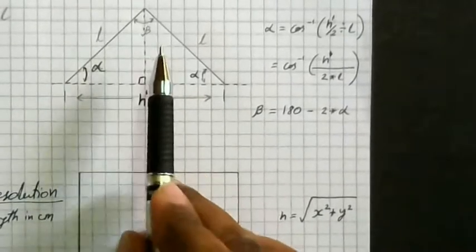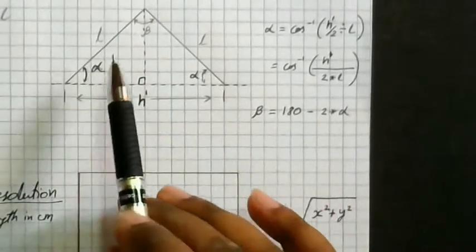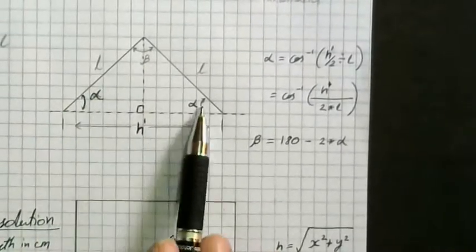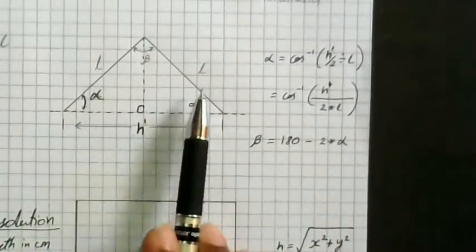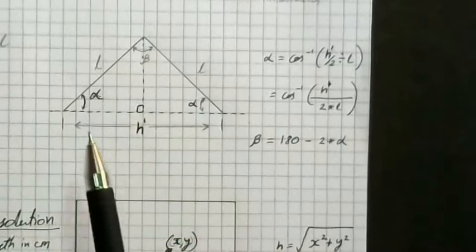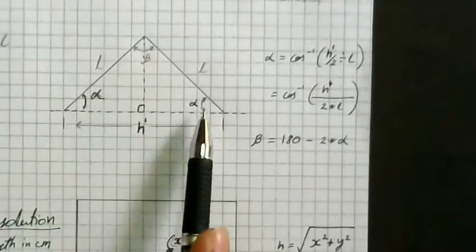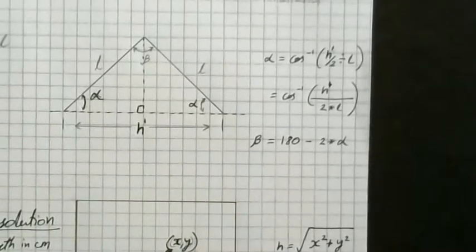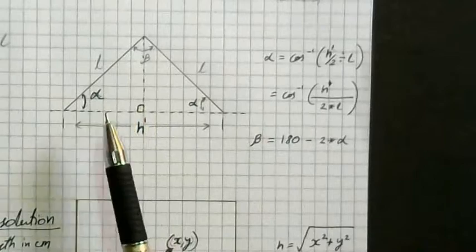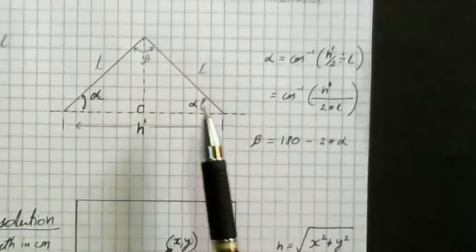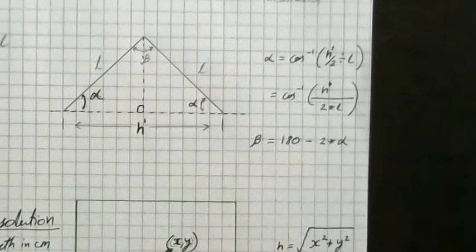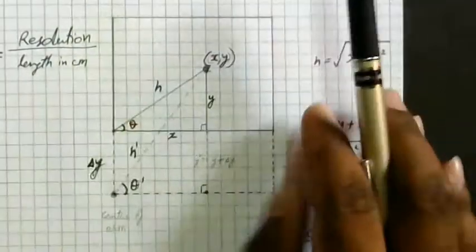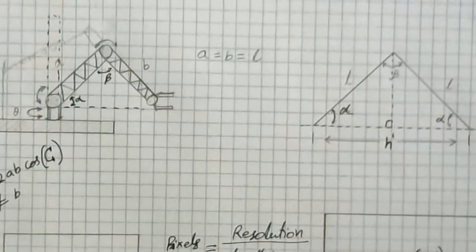Now I have to find beta. If you consider the entire triangle, one of the laws of a triangle is that the sum of all internal angles equals 180. So you can find beta by subtracting alpha and alpha - since these two angles are opposite equal sides, they are equal. So beta equals 180 minus alpha minus alpha, that means beta equals 180 minus 2 times alpha. Right now you know the distance it has to cover, how much it has to rotate - that is theta-dash - and you know alpha and beta. So you apply all these angles to the robotic arm and it will travel the distance h-dash.